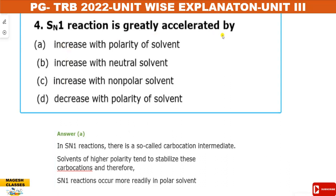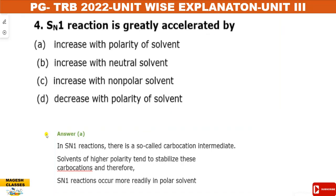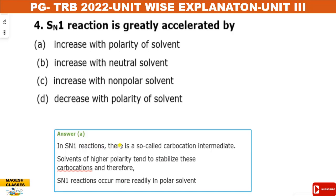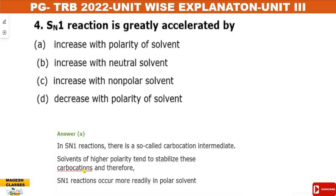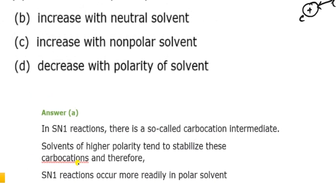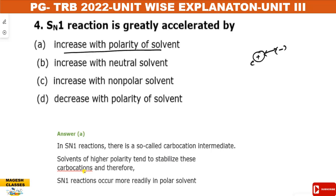SN1 reaction is greatly accelerated by: (A) increase in polarity of the solvent, (B) increase with neutral solvent, (C) increase with non-polar solvent, (D) decrease with polarity of the solvent. SN1 is a first-order reaction with a carbocation intermediate. The carbocation carries a positive charge. Solvents of higher polarity stabilize this carbocation. Therefore, stability and rate of reaction increase with increasing polarity of the solvent. Answer is A.